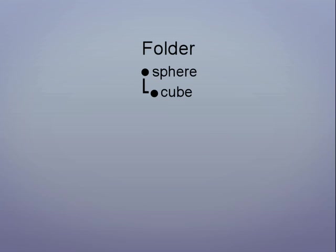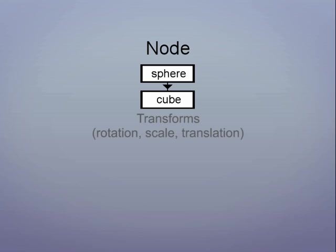Folder networks are usually used for hierarchies that inherit transforms, that is, the rotation, scale and translation. Node networks also allow objects to inherit other attributes, like constraints, equation and even color information.